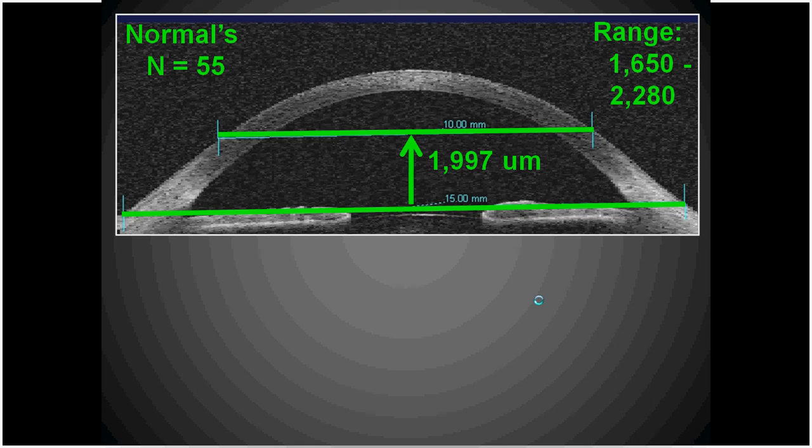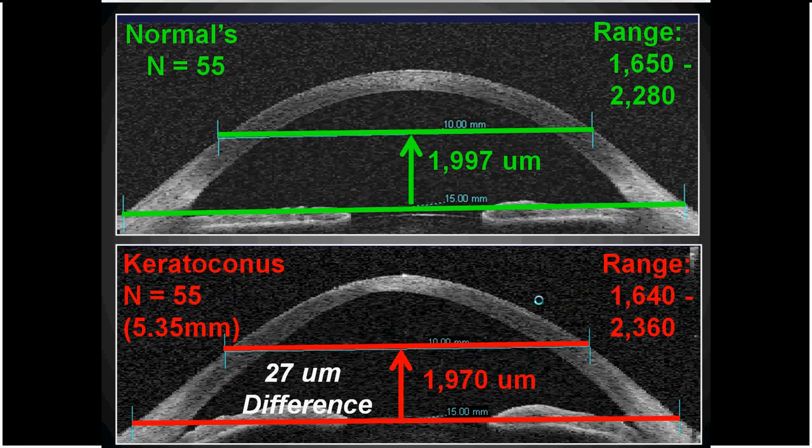If we convert this to a measurement of sagittal depth — what is the depth of the eye from a 10 to 15mm cord in 55 normal eyes? That was 1,997 microns, or approximately 2,000 microns of depth. Compared with 55 diseased eyes, the depth was very similar because the angle is very similar: 1,970 microns, very close to an average of 2,000 microns for both normal and diseased eyes.